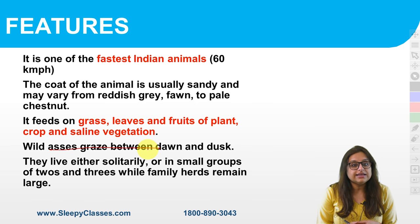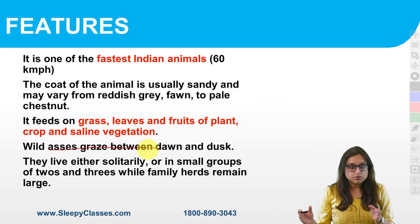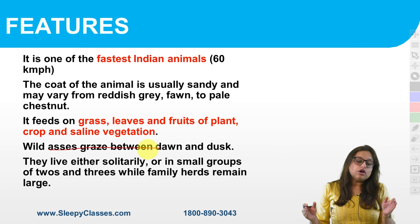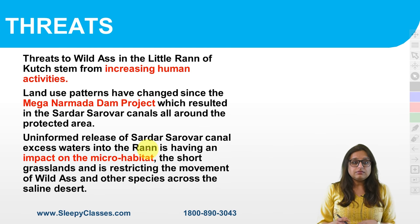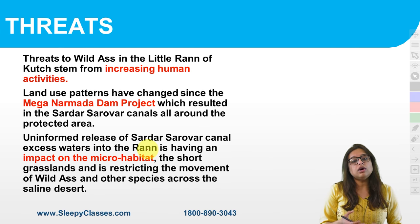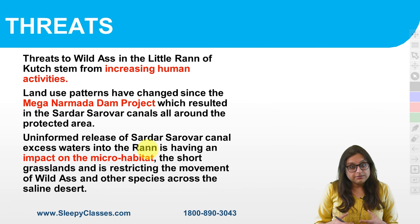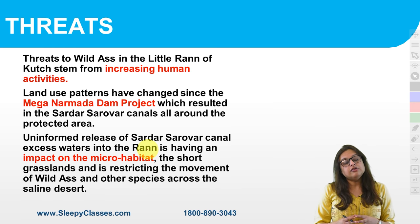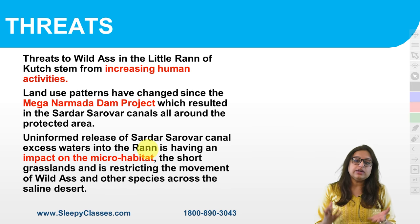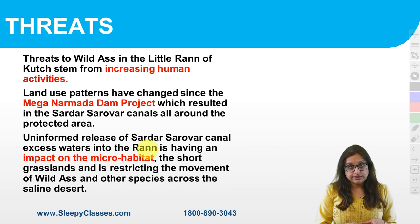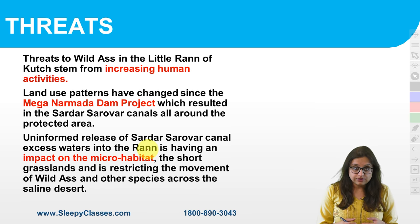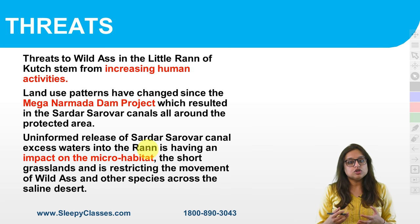Their grazing is under dawn and dusk — they are crepuscular grazers. They are mostly solitary animals. Now, what are the threats? Its population is in the Little Rann of Kutch or surrounding areas, and there are many threats. For example, human and anthropological activities are increasing, which are obviously threatening them.